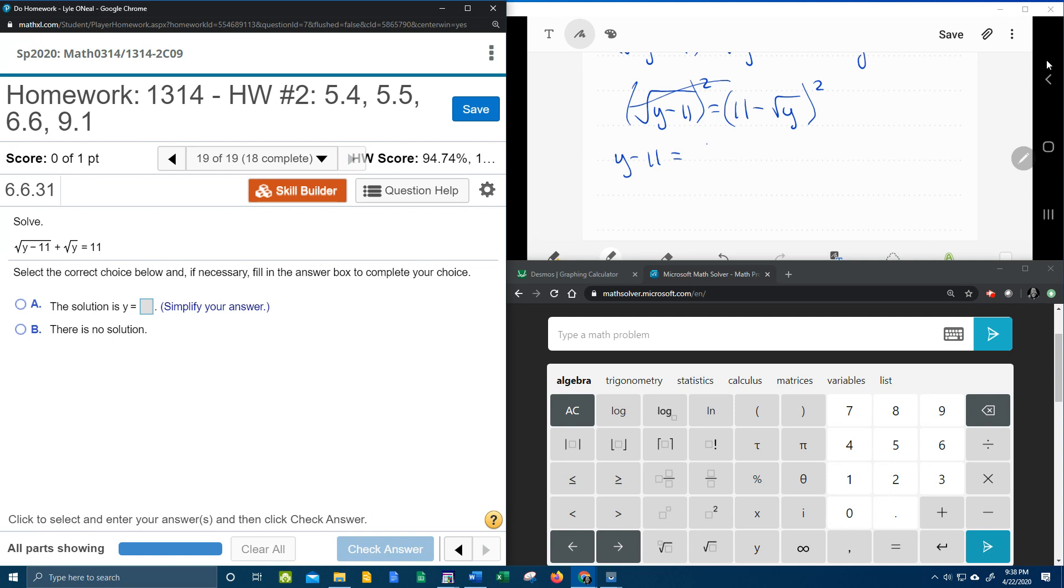But on the other side, we've got 11 minus square root of y squared, which means we're going to have to multiply by itself, and that's going to indicate, uh-oh, the FOIL method. I'm going to have to FOIL this with radical terms, OMG. Here we go, let's be careful.